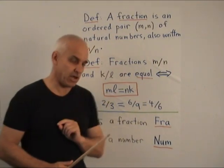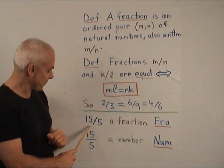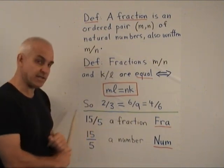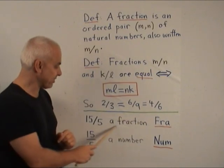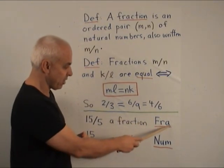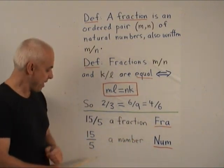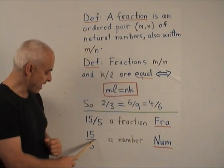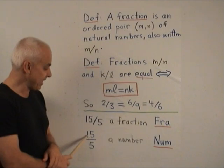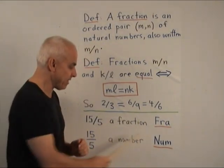Now there's a possible confusion here with our earlier notation. And let's make sure we get this straight. So right now, let's say we have 15 over 5 with this slanted line. That represents for us a fraction. And it's a new type of mathematical object, which we'll call FRA, short for fraction. 15 over 5 with a horizontal line like that, that represents a division. That is a number still in the type num.